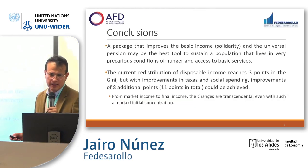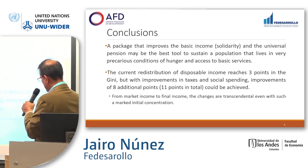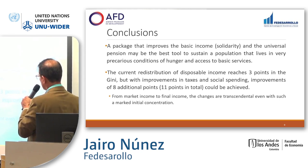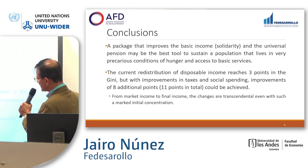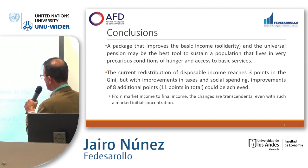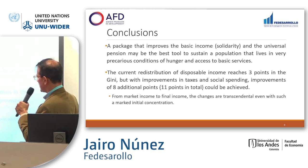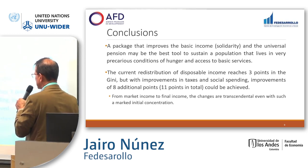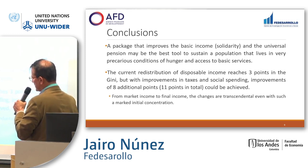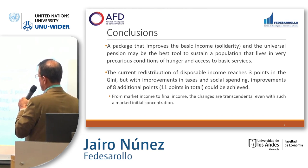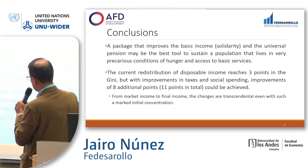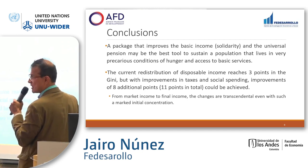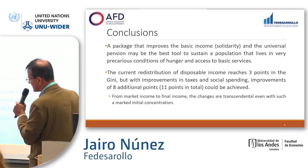In conclusion, a package that improves basic income and the universal pension may be the best tool to support a population living in very precarious conditions of hunger and limited access to basic services. The current redistribution of disposable income reached only three Gini points in 2020, but with improvements in taxes and social spending, an additional eight Gini points — eleven in total — could be achieved. From market income to final income, the changes are transcendental, even given such high initial concentration of the Gini coefficient in Colombia. Thank you very much.